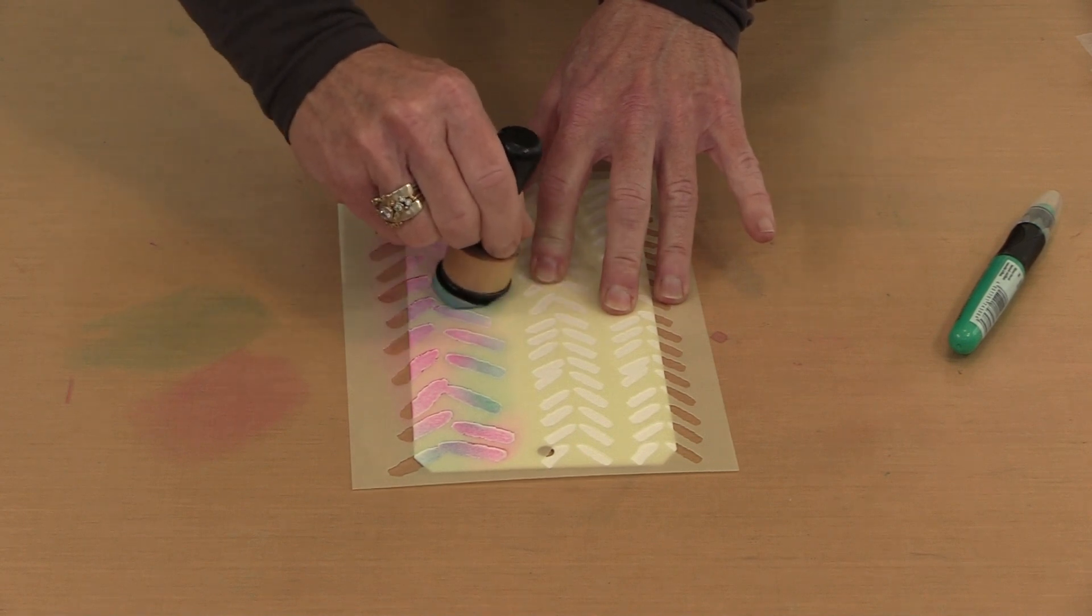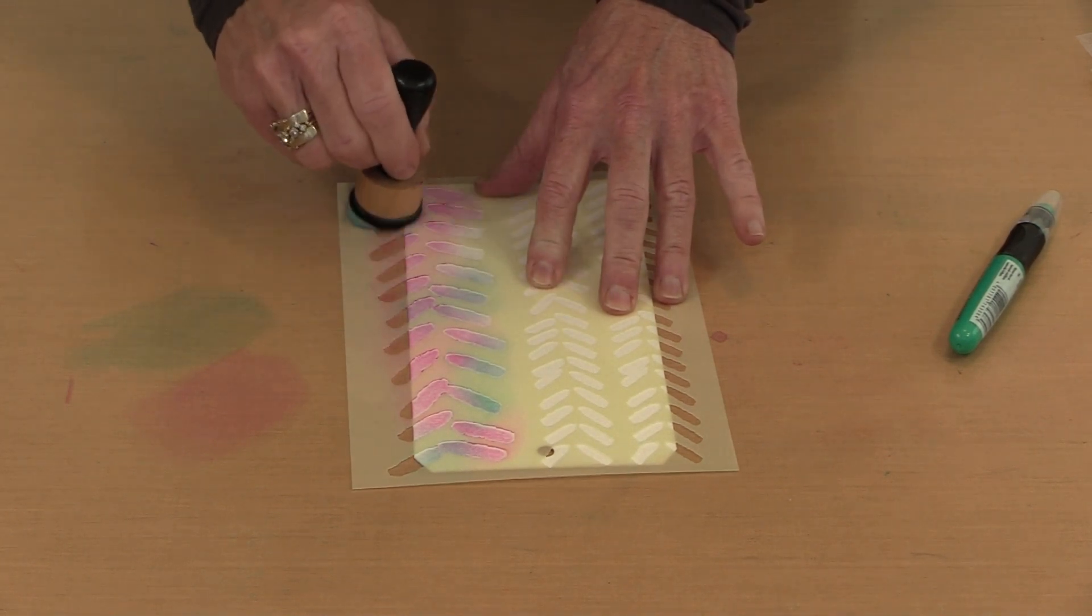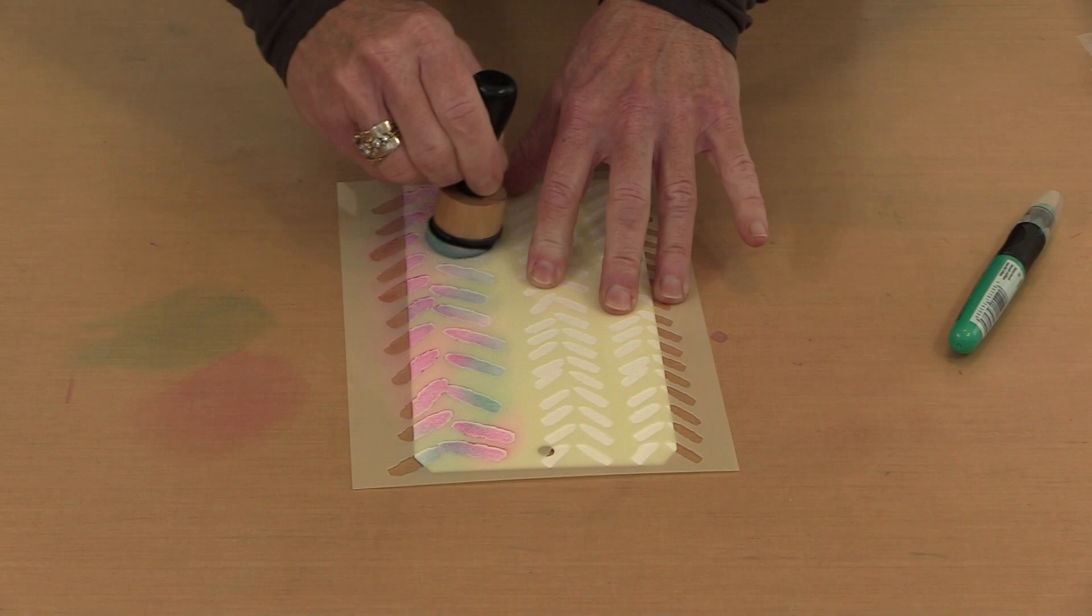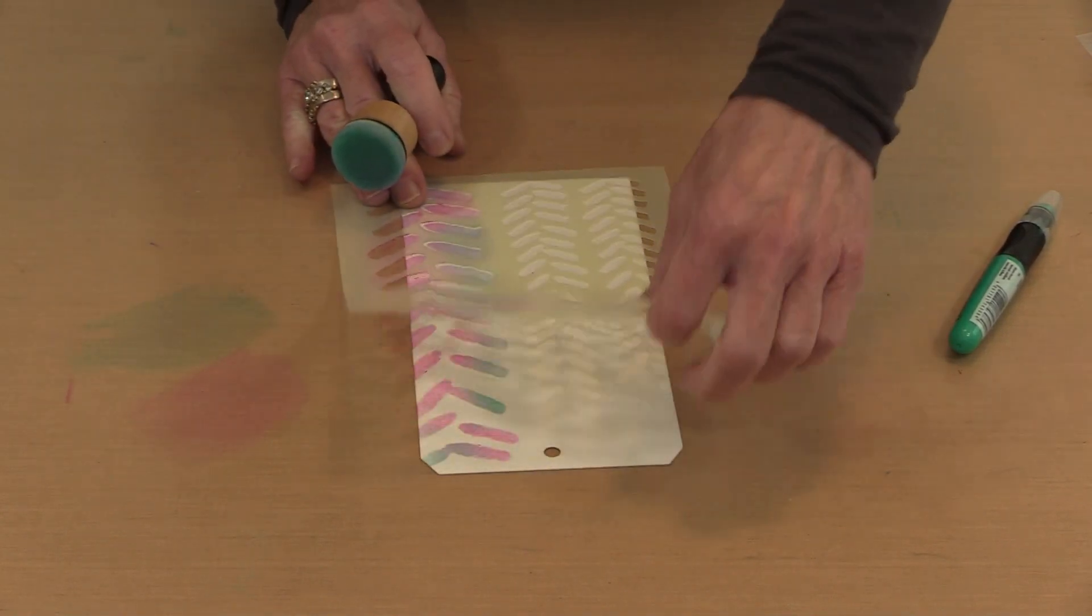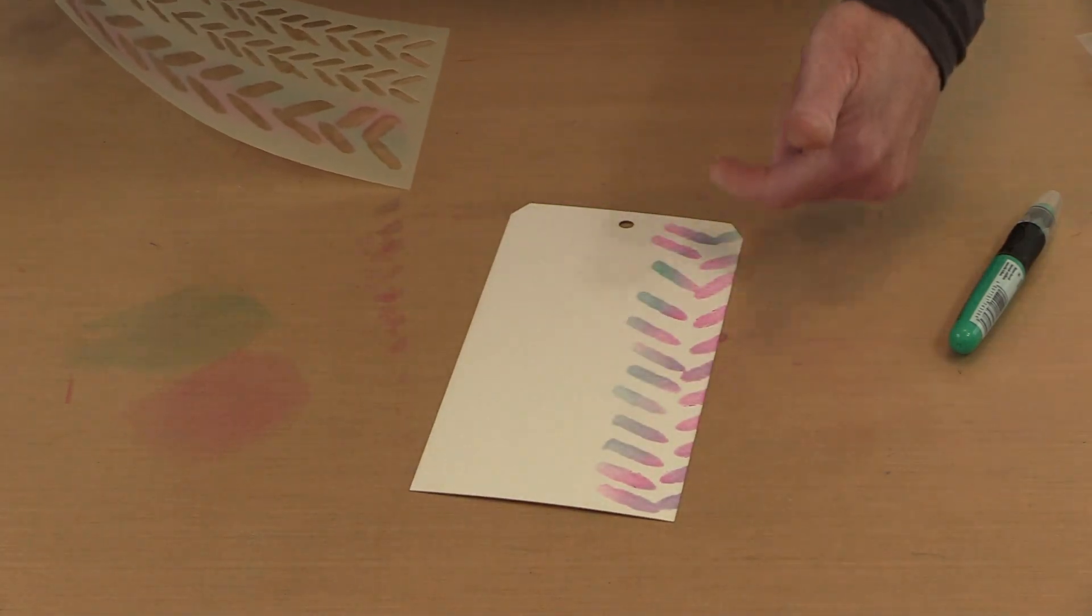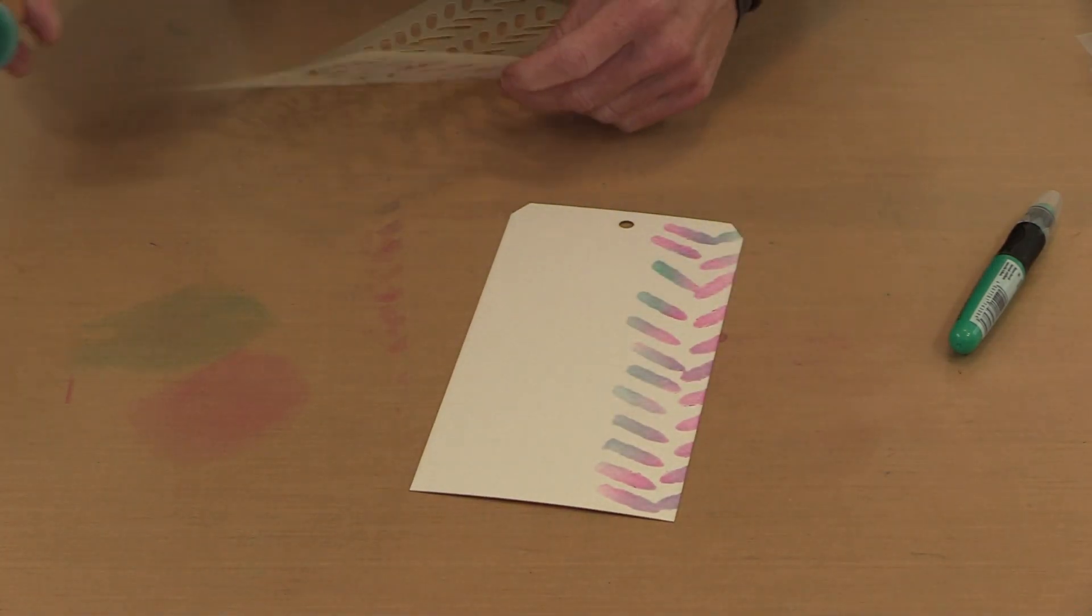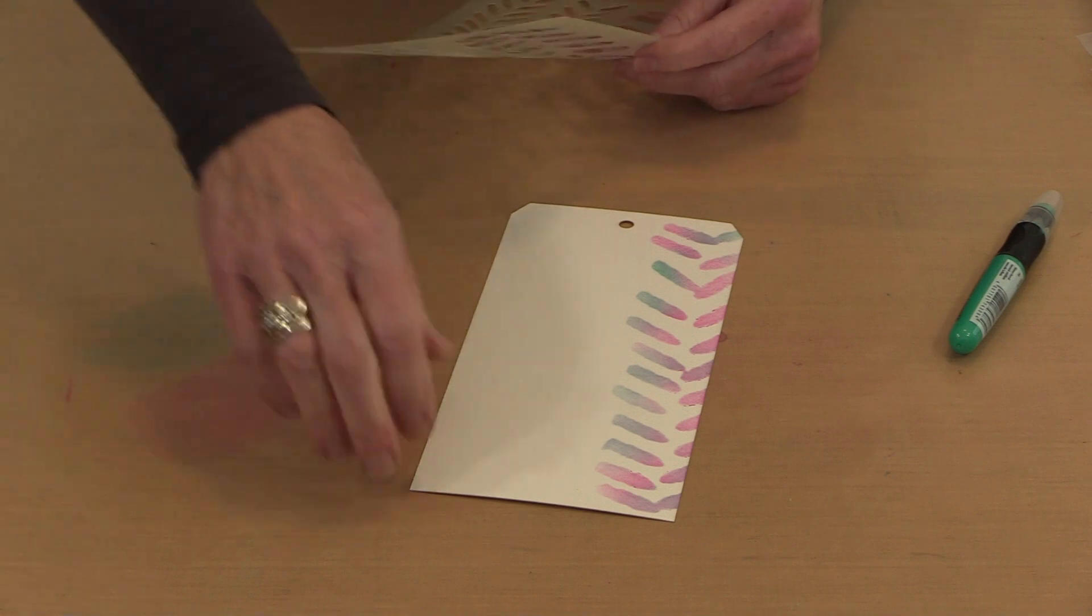Super easy, whether you're blending with your finger or you're blending with an ink blending tool the way that I am. Either way, easy to do and it works really well. So this is that particular stencil. So I like this pattern that I've got along the edge. It's ready to do whatever it is I decide to do as I move on.